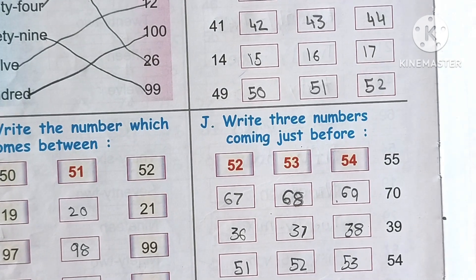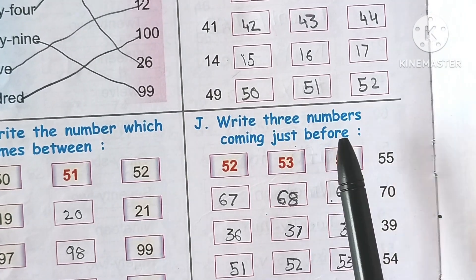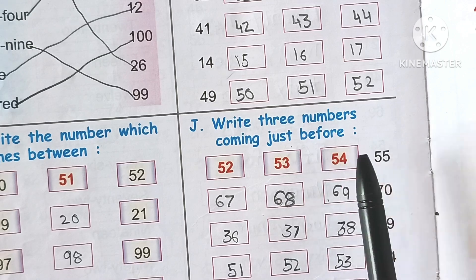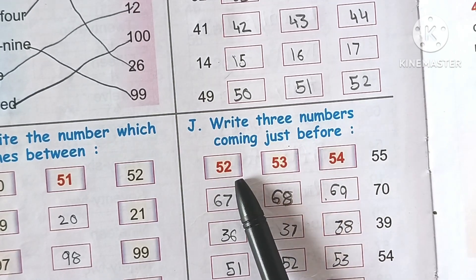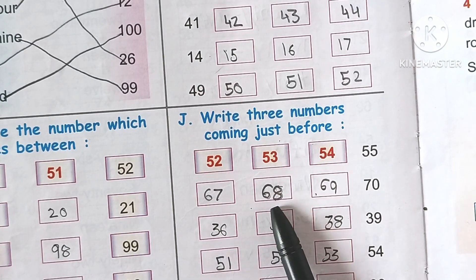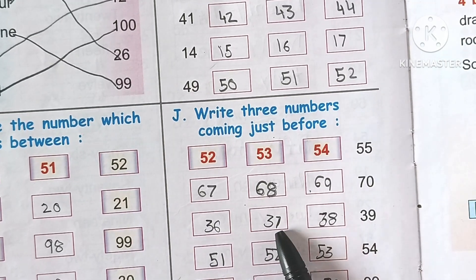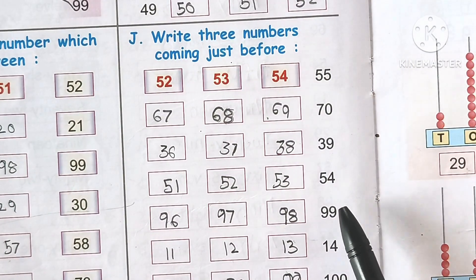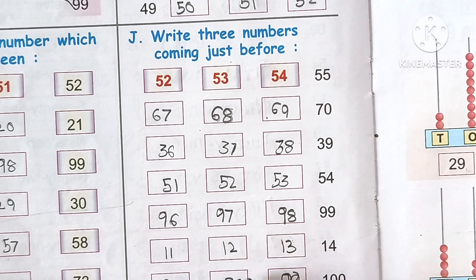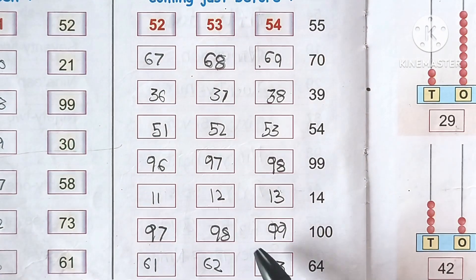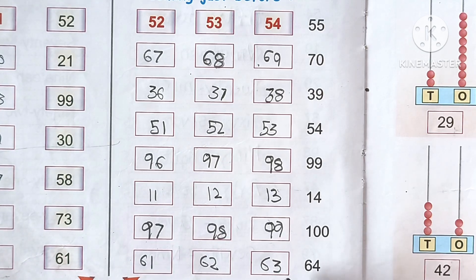Now let's see the next question: write three numbers coming just before. Before 54: 53, 52, 51. Before 70: 69, 68, 67. Before 39: 38, 37, 36. Before 54: 53, 52, 51. Before 99: 98, 97, 96. Before 14: 13, 12, 11. Before 100: 99, 98, 97. Before 64: 63, 62, 61.